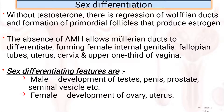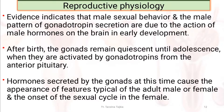The sex-determining features in the case of male include development of the testis, penis, prostate, seminal vesicle, etc. In the case of female, they include development of the ovary, uterus, etc.